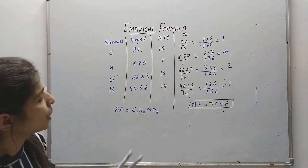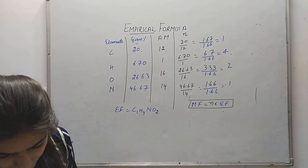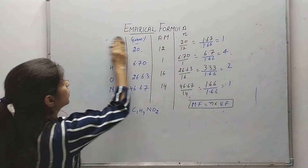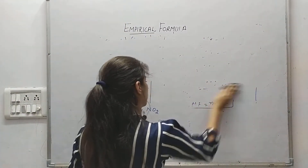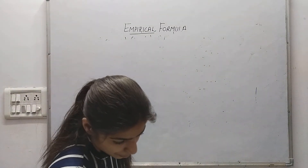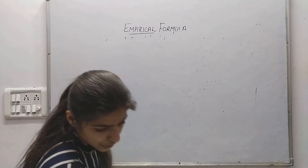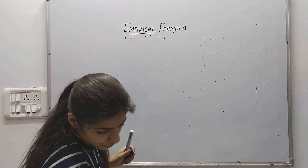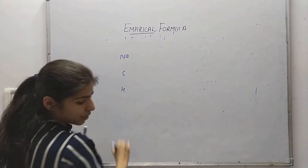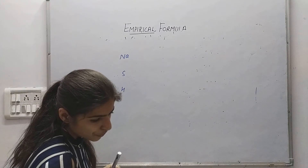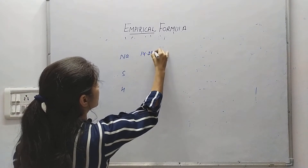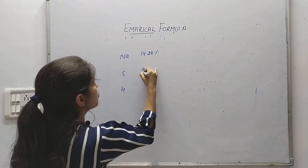This is the empirical formula. Let's take one more example in which we will also calculate the molecular formula. Sodium, sulfur, and hydrogen are given with percentages: sodium 14.28%, sulfur 9.92%, and hydrogen 6.20%.